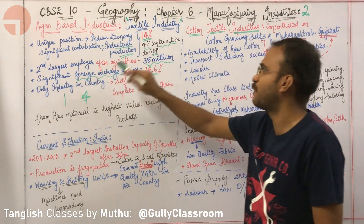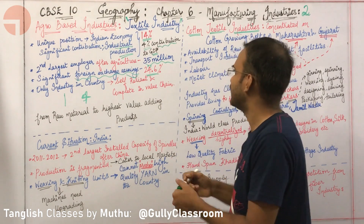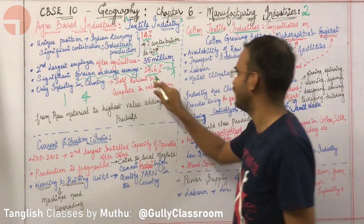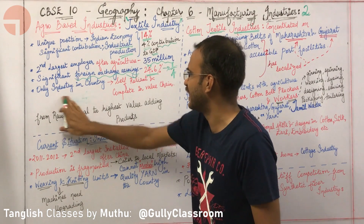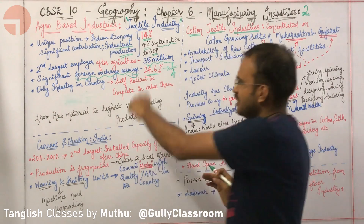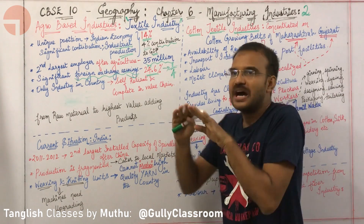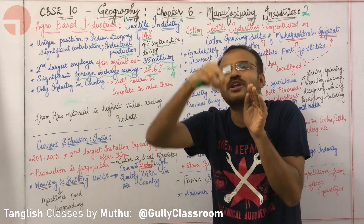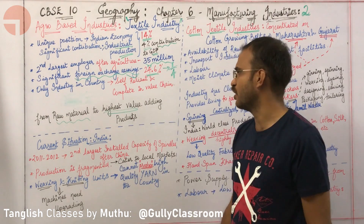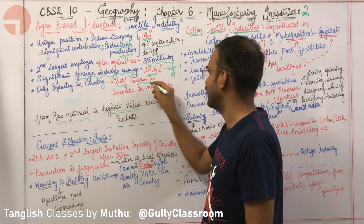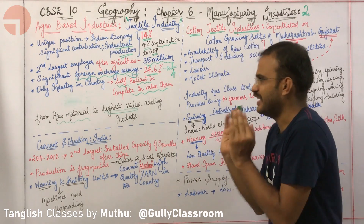To summarize: 14% of industrial production, 4% GDP contribution, 35 million employed — second largest employer after agriculture — and 24.6% of significant foreign exchange earnings. Textile Industries is the only industry in the country which is self-reliant, complete in its value chain, from raw material to the highest value product.